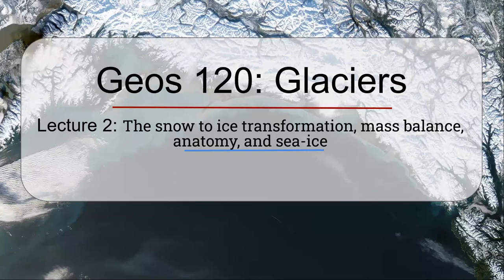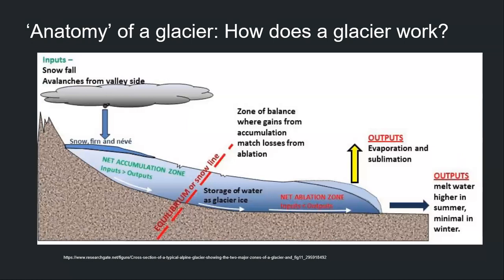Hello and welcome to the second lecture of the Glacier part of GEOS 120/119. Today we are going to talk about how snow transforms into ice and forms glaciers. We're going to introduce the concept of mass balance, which is very important for glaciologists. We're also going to see the anatomy of glaciers and sea ice. So let's start with the anatomy of a glacier.